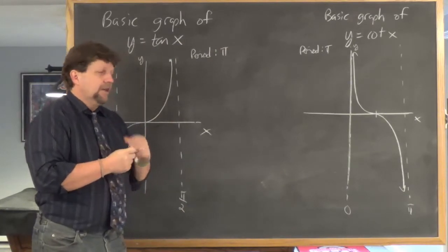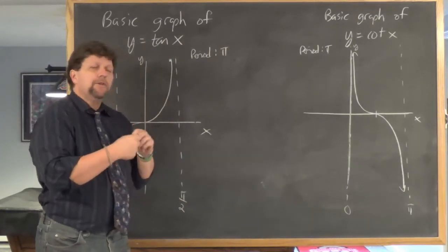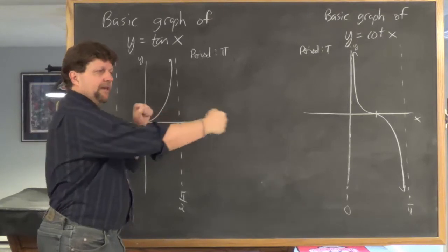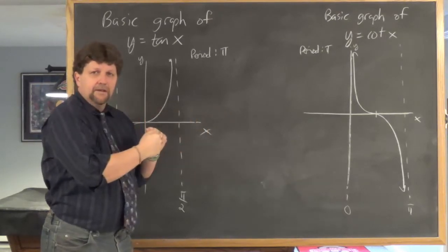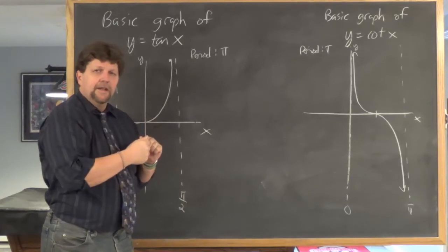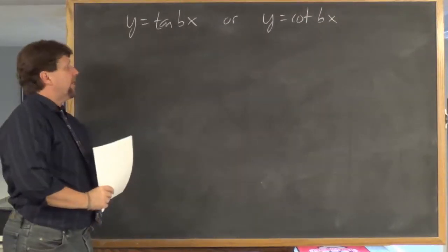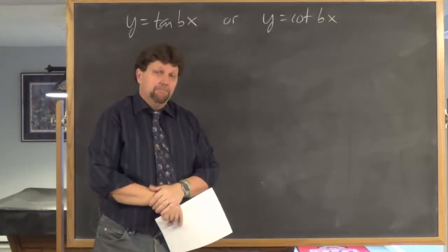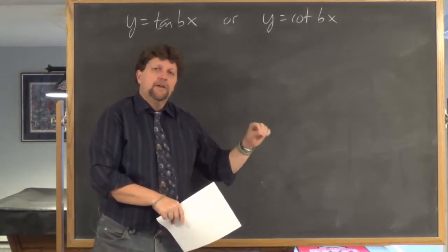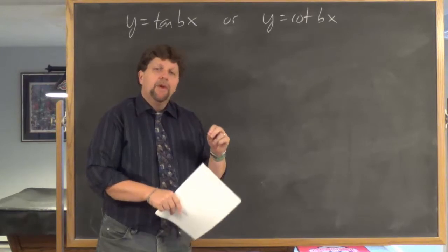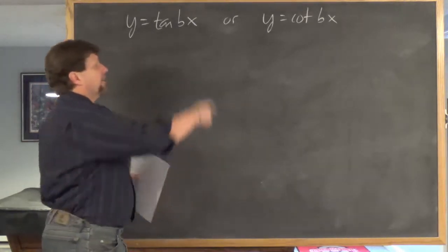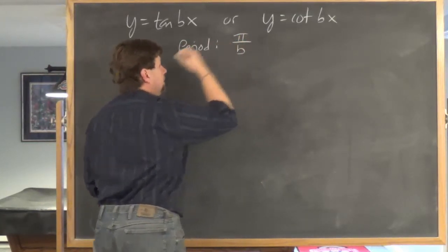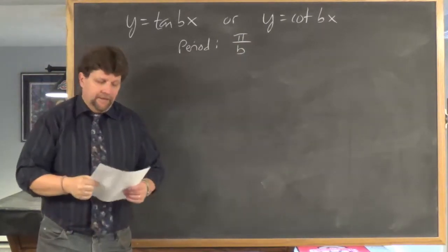The next thing I'll look at is what happens if we do a change to the period — just like what we saw with sine and cosine, like a horizontal stretching or horizontal compressing. If you're asked to graph a function of the form y equals tangent bx or y equals cotangent bx, just like with sine and cosine, one of the first things to do is determine the period. For either one of these, the period is pi divided by b.